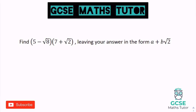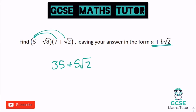Last question: find (5 − √8)(7 + √2), leaving your answer in the form a + b√2. I quite like this — the question gives us a hint that it's all going to simplify down to a root 2 at the end of the surd parts. 5 times 7 is 35. 5 times root 2 is 5 root 2. Negative root 8 times 7 is negative 7 root 8. And negative root 8 times root 2 is negative root 16, which is negative 4.